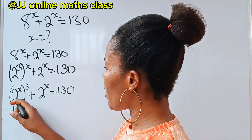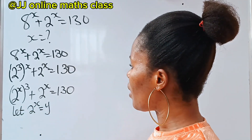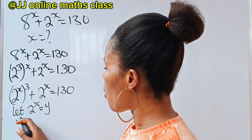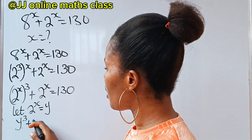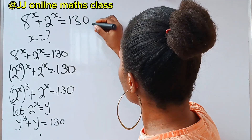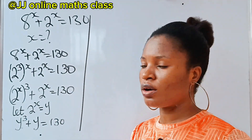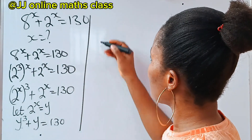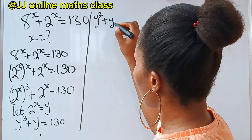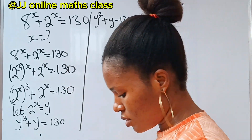We have 2 to the power of x here. So let 2 to the power of x be equal to y. If we say that, then this equation becomes y to the power of 3 plus y is equal to 130. Let's write this properly because this is a cubic polynomial: y cubed plus y minus 130 is equal to 0.